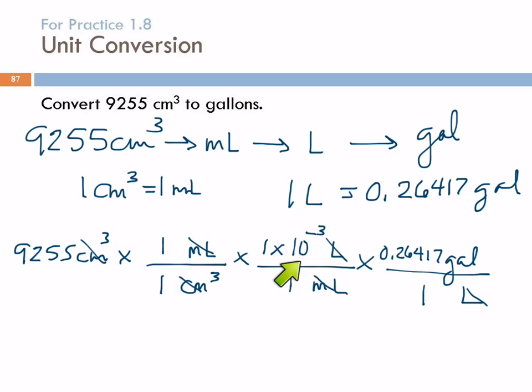On your computer, on your calculator, this is 1 and then the EE or the EXP button and minus 3, if you've forgotten. 9255 times 1 divided by 1 times 1 EE minus 3 times 0.26417 equals 2.44 gallons.